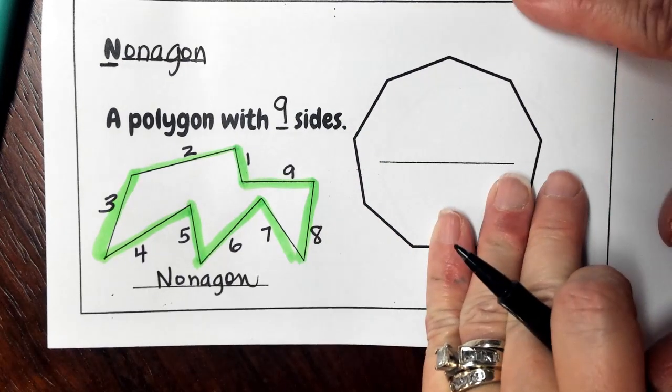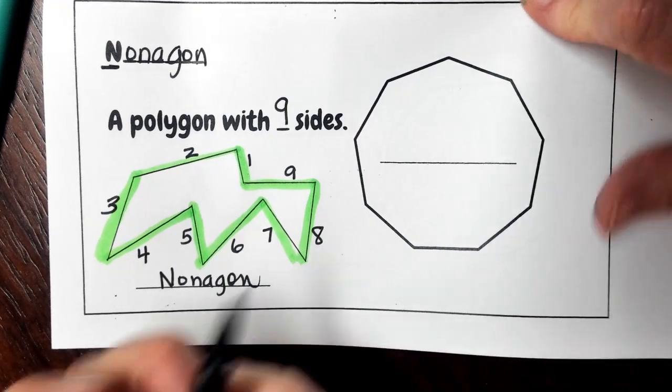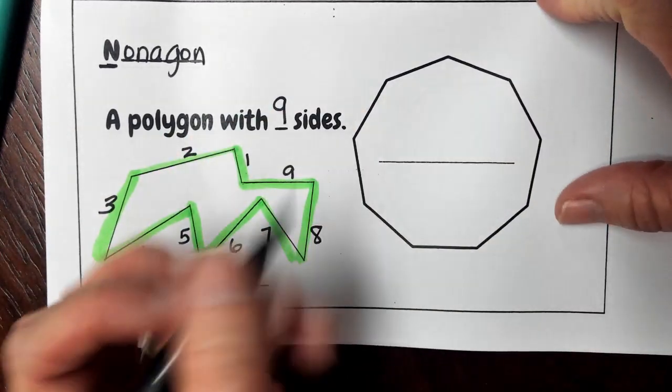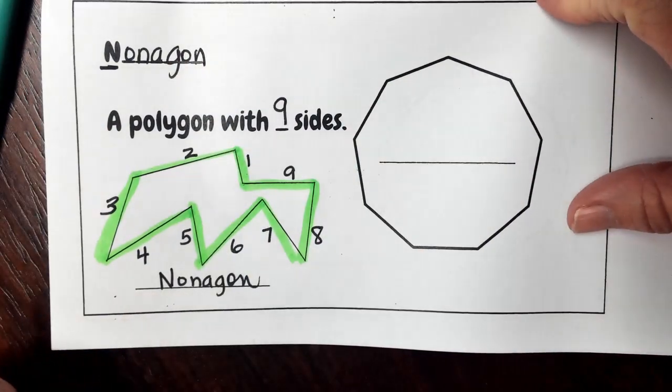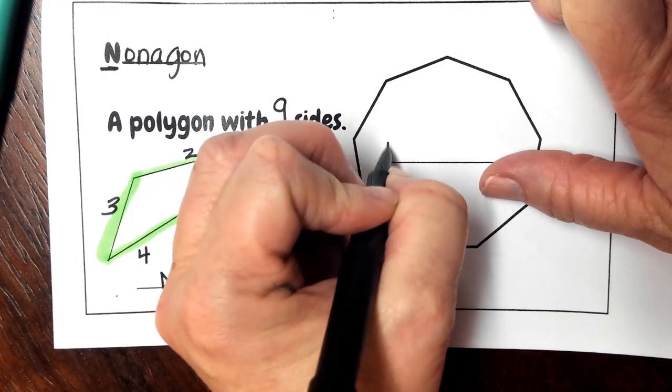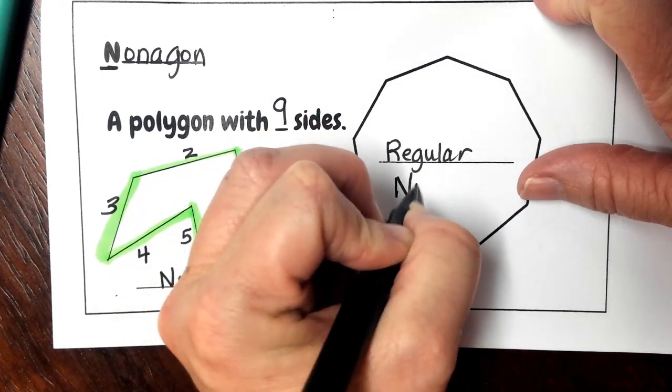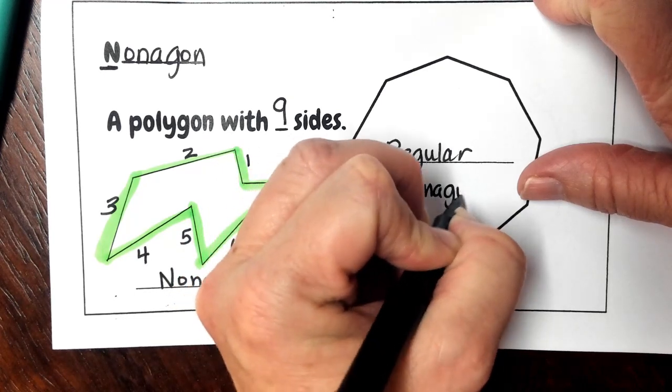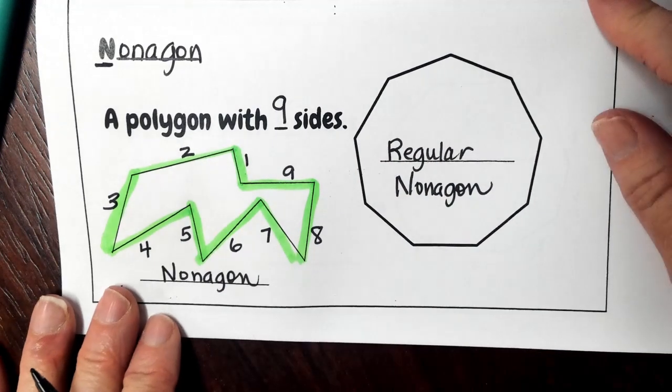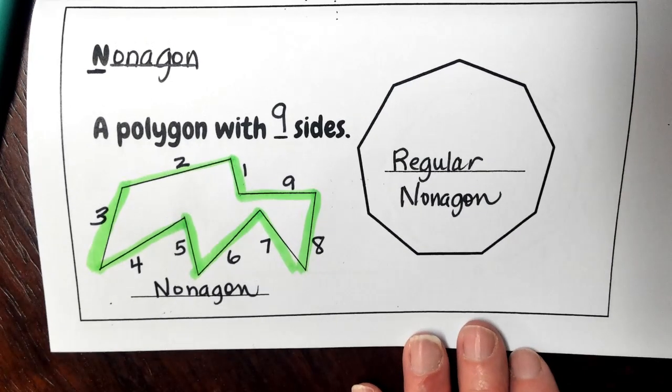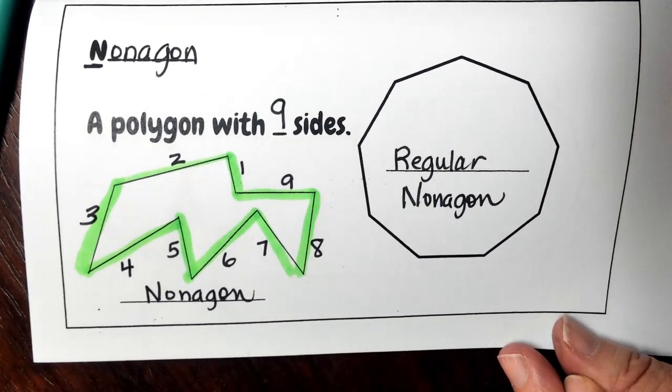And then we have another example of a nonagon here, and this looks a little more regular. So it looks like we have equal sides and equal angles. So we're going to call this our regular nonagon. Make sure you have that information in your book.